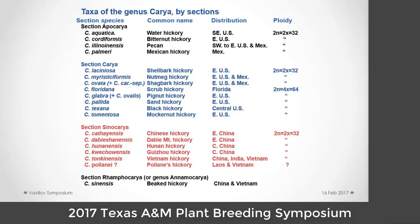Our distribution of species includes areas that Vavilov considered important — Southeast Asia as Zone 1, Indochina as Zone 2, and Mexico as Zone 7. Our genus is divided into four sections. Section Apocaria and section Carya are the pecan hickories and true hickories respectively. Section Sinocarya is primarily in Asia and includes only diploid members. Section Rhamphocarya is also in Asia, and some consider it a separate genus.